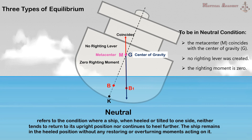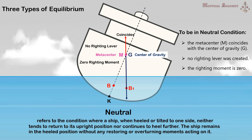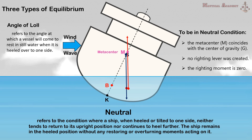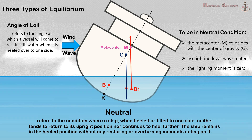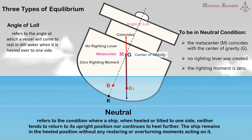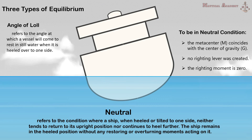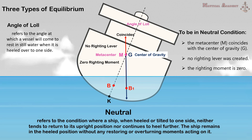If there are no external forces applied to the ship, she will remain inclined at some angle. This angle is what we call the angle of loll. The angle of loll refers to the angle at which a vessel will come to rest in still water when it is heeled over to one side. If the ship is heeled beyond the angle of loll, the center of buoyancy moves further to the low side, thus creating a righting lever and righting moment to bring the ship back to the angle of loll. We can see that the ship will oscillate about the angle of loll instead of her upright position. The angle of loll may occur on port or starboard depending on the external forces applied. If the center of buoyancy does not move far enough under the center of gravity, the ship will capsize.